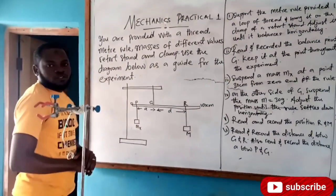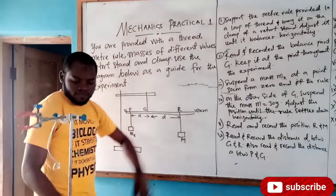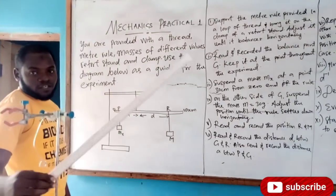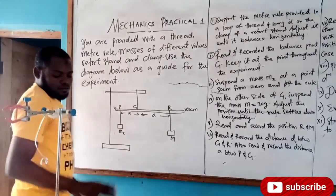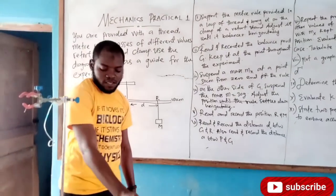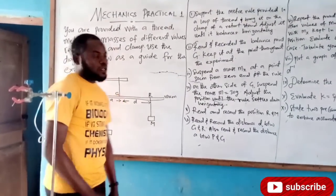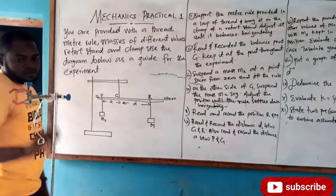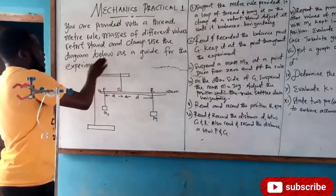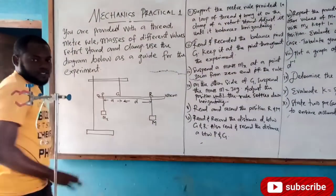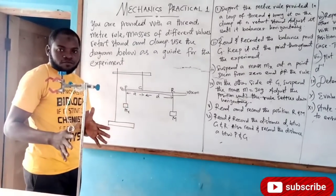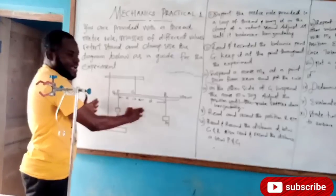This is the question on the board. We are told that you are provided with a thread — here is the thread, as you can see — a meter rule, here is our meter rule, masses of different values: one of 10 grams, one of 20 grams, one of 50 grams. Also a retort stand — here is the retort stand — and clamp. Use the diagram below as a guide for the experiment, so whenever you set your apparatus, you check the diagram given to you.